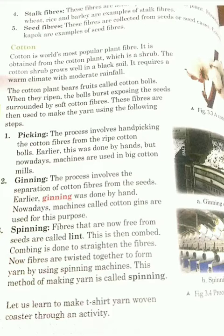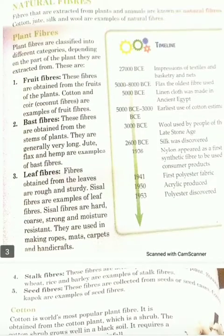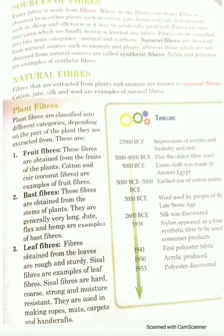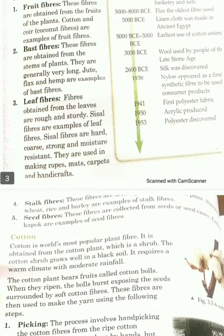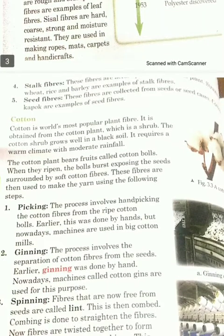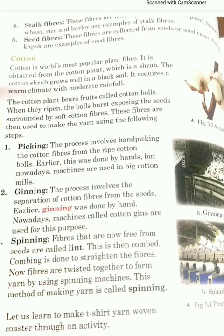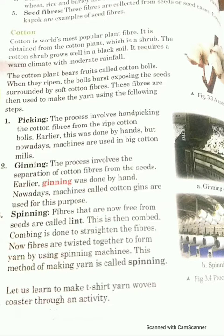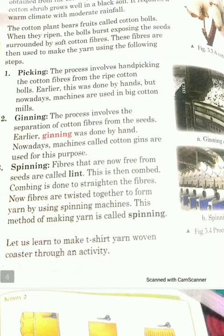So we have five types of plant fibers: fruit fiber, bast fiber, leaf fiber, stalk fiber, and seed fiber. Then we were talking about cotton. Cotton is the world's most popular plant fiber. It is a type of shrub and it requires black colored soil for growth, warm climate, and moderate rainfall. I have also discussed the process of how cotton is processed.